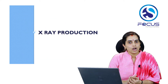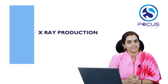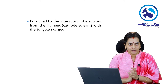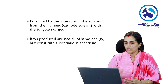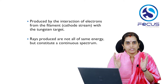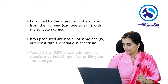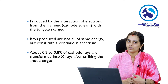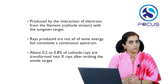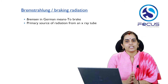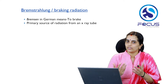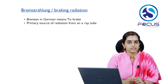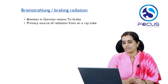X-rays are produced by the interaction of the electron beam from the tungsten filament with the tungsten target. Not all X-rays are of the same energy; we get a continuous spectrum of radiation. Only about 0.2 to 0.8% of the cathode rays are transformed into X-rays, while the remaining 99% is converted into heat. X-rays are of two types: Bremsstrahlung radiation and characteristic radiation. Bremsstrahlung, meaning 'braking radiation,' is the primary source of radiation from an X-ray tube.